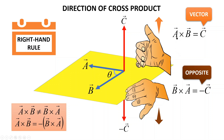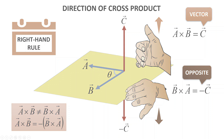Our four fingers refer to vectors a and b, and our thumb refers to the resulting vector c. I hope you enjoyed this lesson. Please hit the subscribe button to keep this channel going, and stay tuned for more upcoming videos. Thank you.